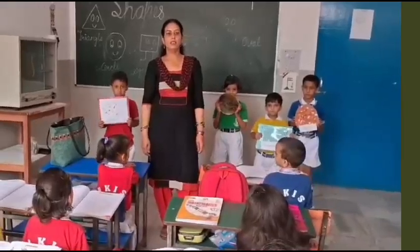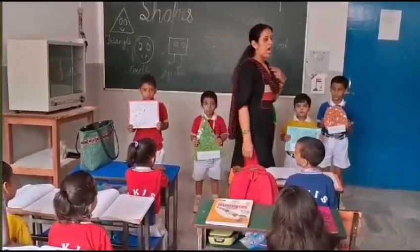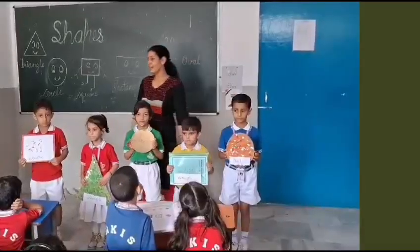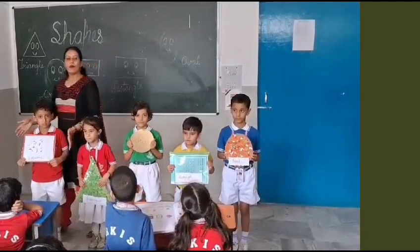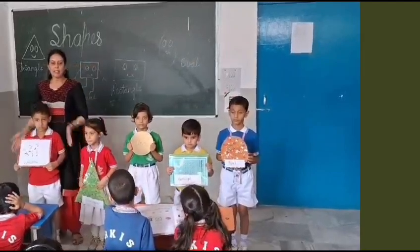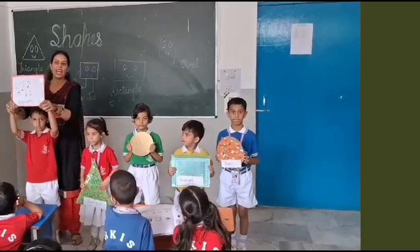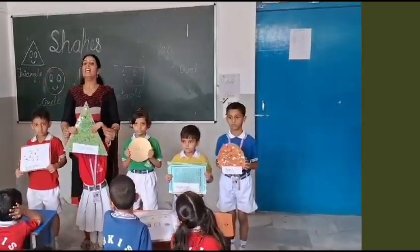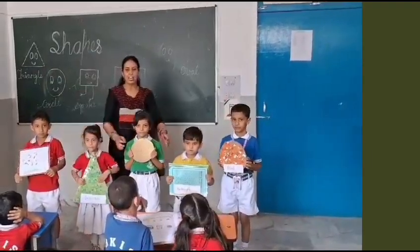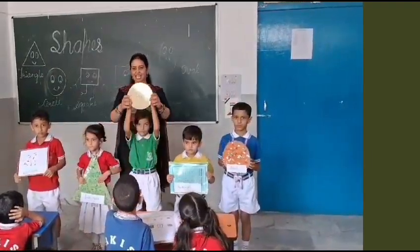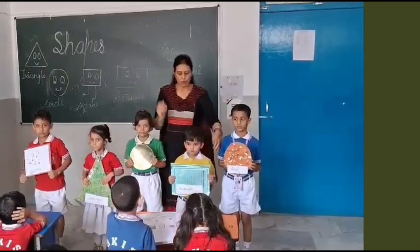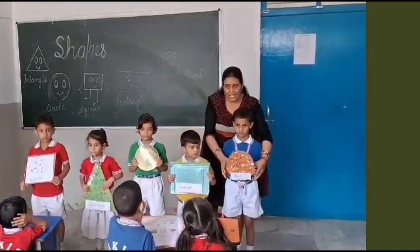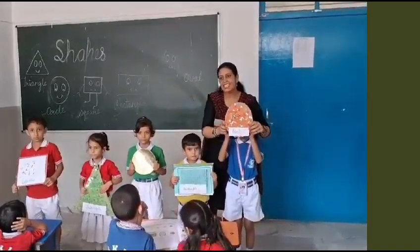Hello everyone. We are ready, ma'am. How are you? We are ready, ma'am. First one is square. Second one is triangle. Third one is circle. Fourth one is rectangle. And fifth one is oval.